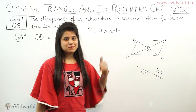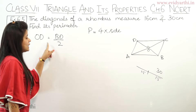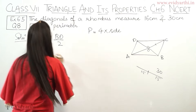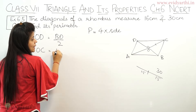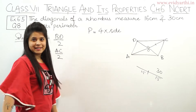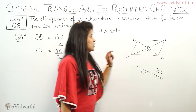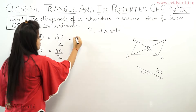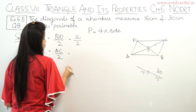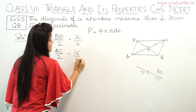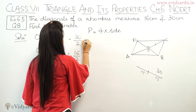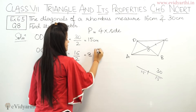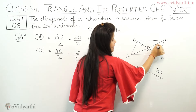Similarly, OC equals AC upon 2. BD and AC are the two diagonals given: one is 16 and one is 30. Let's say BD is 30, so OD is 30 upon 2 equals 15. AC is 16, so OC is 16 upon 2 equals 8. Now we have both lengths: 15 and 8.